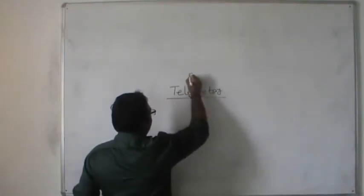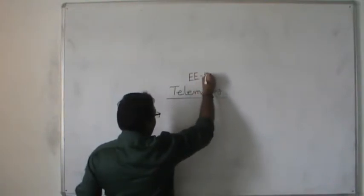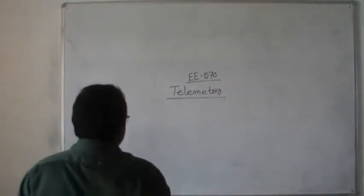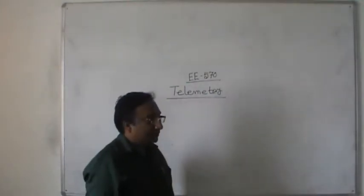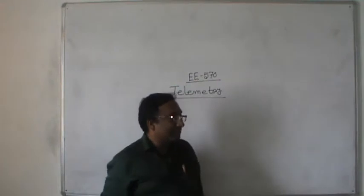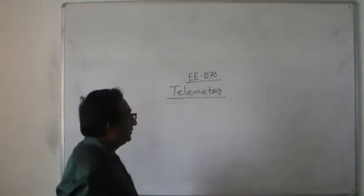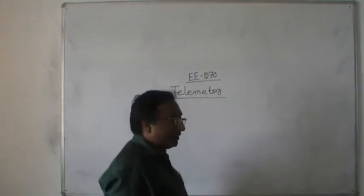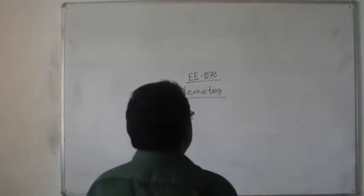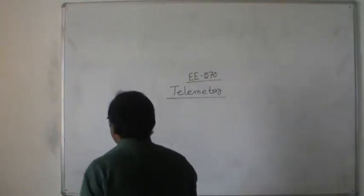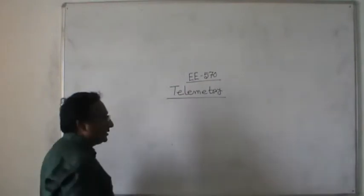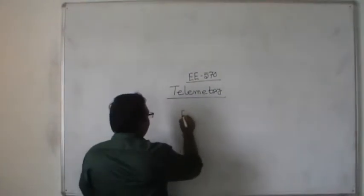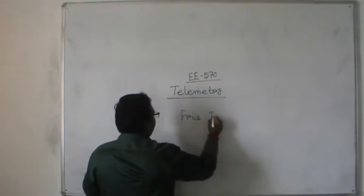In the previous lecture, I was discussing about telemetry in power system instrumentation. I gave my lecture on the definition of telemetry, advantages of telemetry over basic communication, the block diagram of telemetry, the line of sight feature, antenna system design, and the Friis transmission formula.